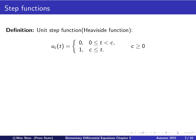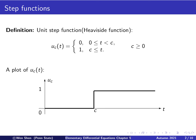This is only defined for t greater than zero. On the interval from zero to c, the function is zero. At c, the function has a jump of unit height of one, so for t greater than c, it becomes one. In this discussion, c is non-negative.